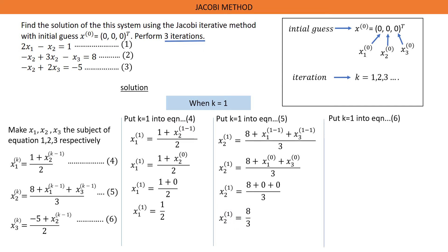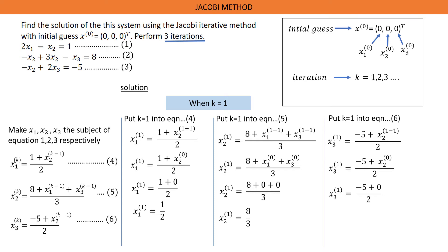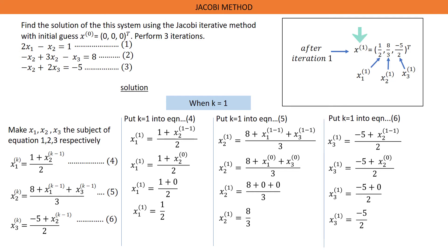Put K equals 1 into equation 6. Solving this gives us S3^(1) equals negative 5 plus S2^(0) all over 2. The initial guess value of S2 is 0, so we replace it with 0. Solving this gives us S3^(1) equals -5/2. After iteration 1, the values are S^(1) equals [1/2, 8/3, -5/2] transpose. That is, S1^(1) = 1/2, S2^(1) = 8/3, and S3^(1) = -5/2.